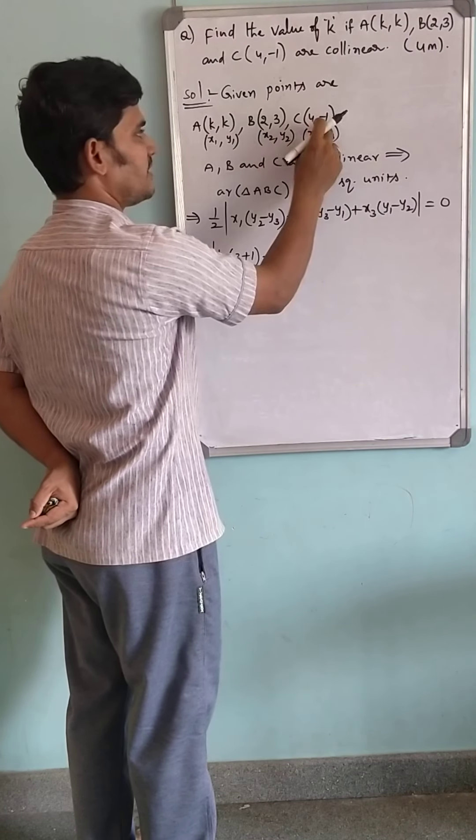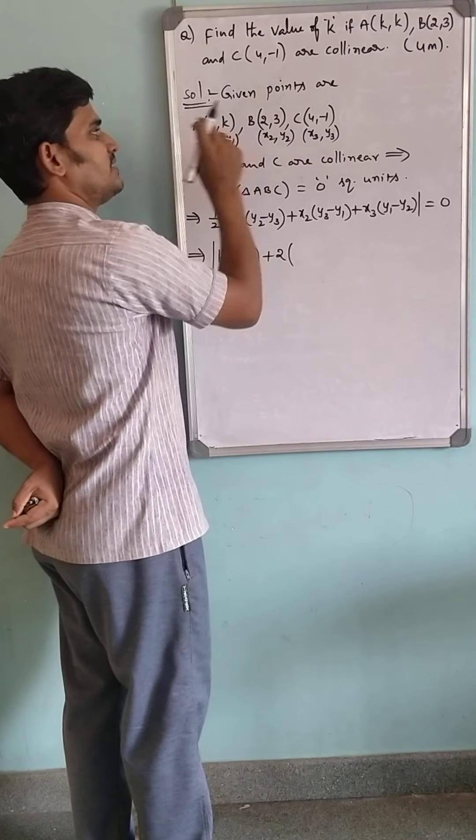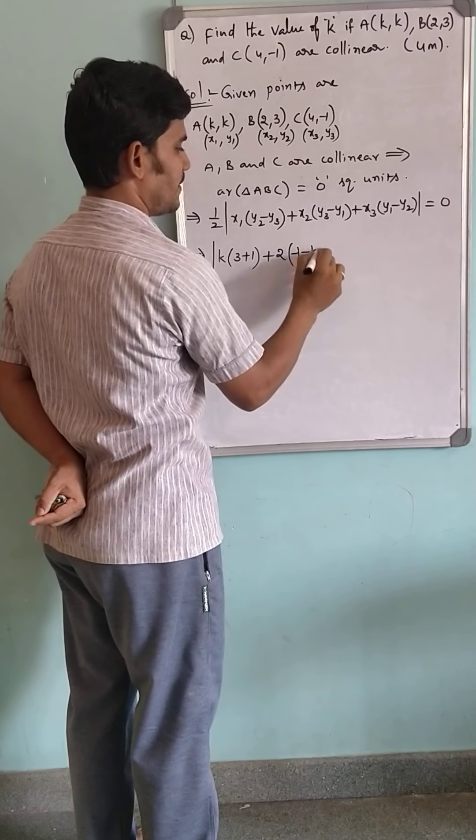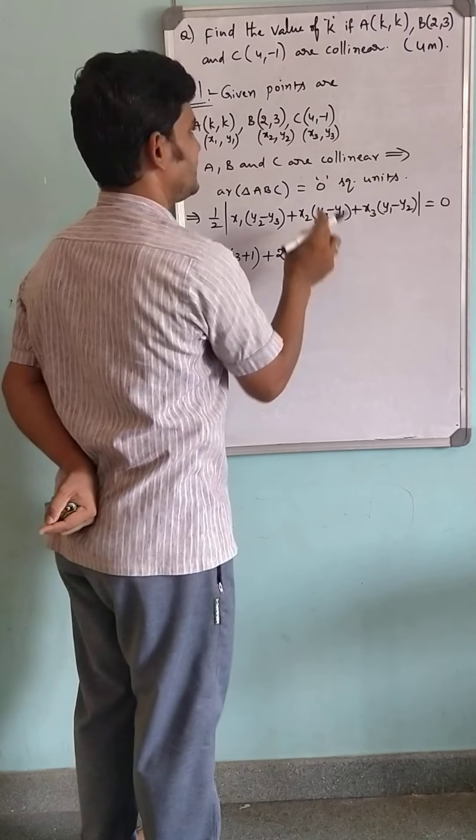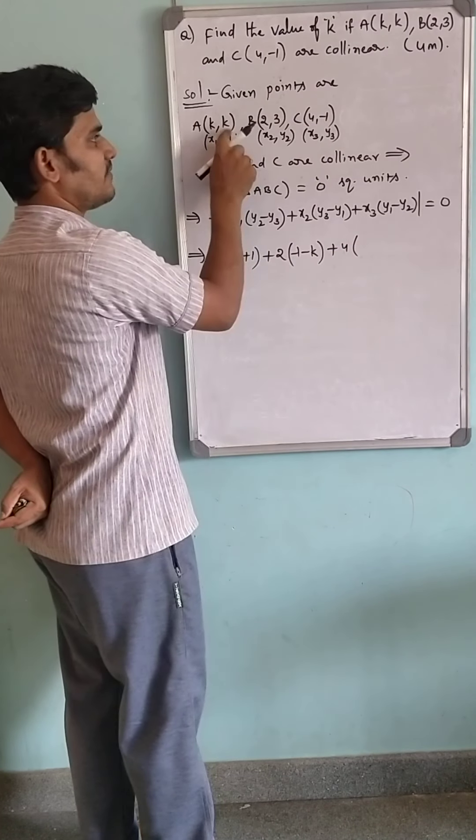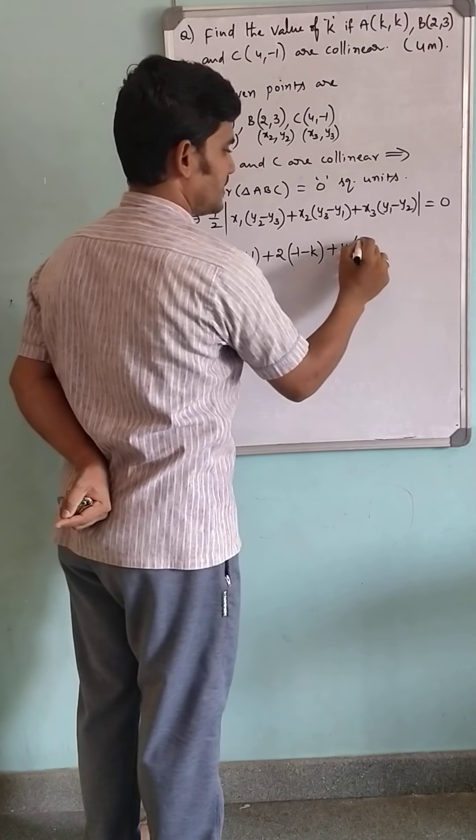Plus X3, that is 4, into the difference of remaining two Y coordinates: K minus 3.